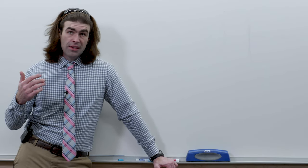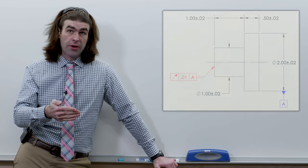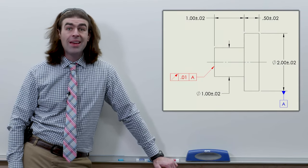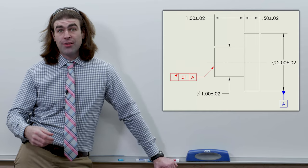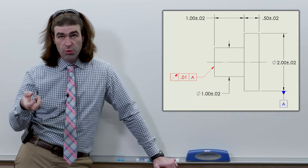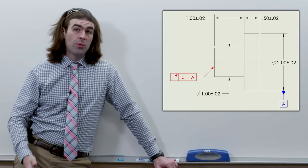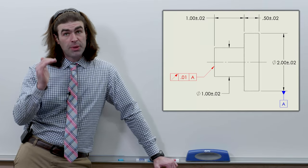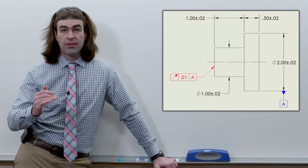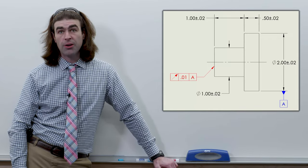So next up is circular runout applied to a surface perpendicular to the datum axis. What this controls is the wobble of the surface. It just makes sure it kind of spins true. It doesn't control flatness. Flatness is controlled within the limits of size because you're doing individual checks, so you could get kind of a waffle shaped area on a perpendicular surface.